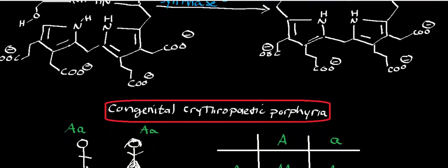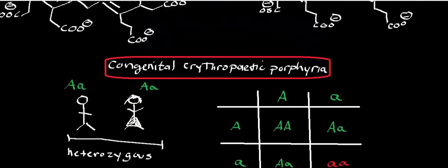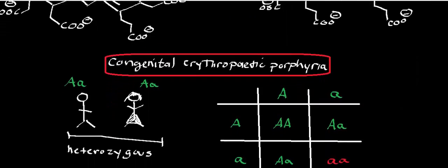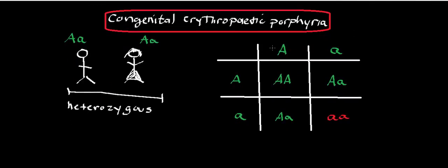Let's talk a little bit about the genetics of this enzyme. If you have a deficiency of this enzyme, you're not going to be able to do the transformation of converting hydroxymethylbilane into uroporphyrinogen 3. What you'll develop is a disease called congenital erythropoietic porphyria, which is an autosomal recessive disorder. In order to express this disease, you're going to have to be homozygous recessive. If you're heterozygous for this genotype, you will not express congenital erythropoietic porphyria.